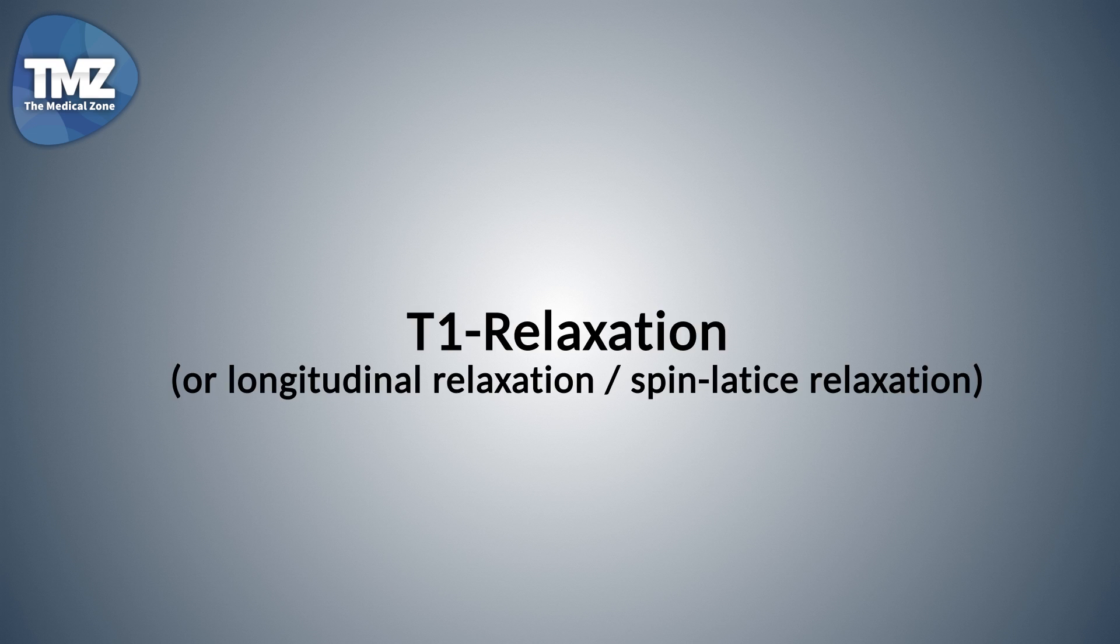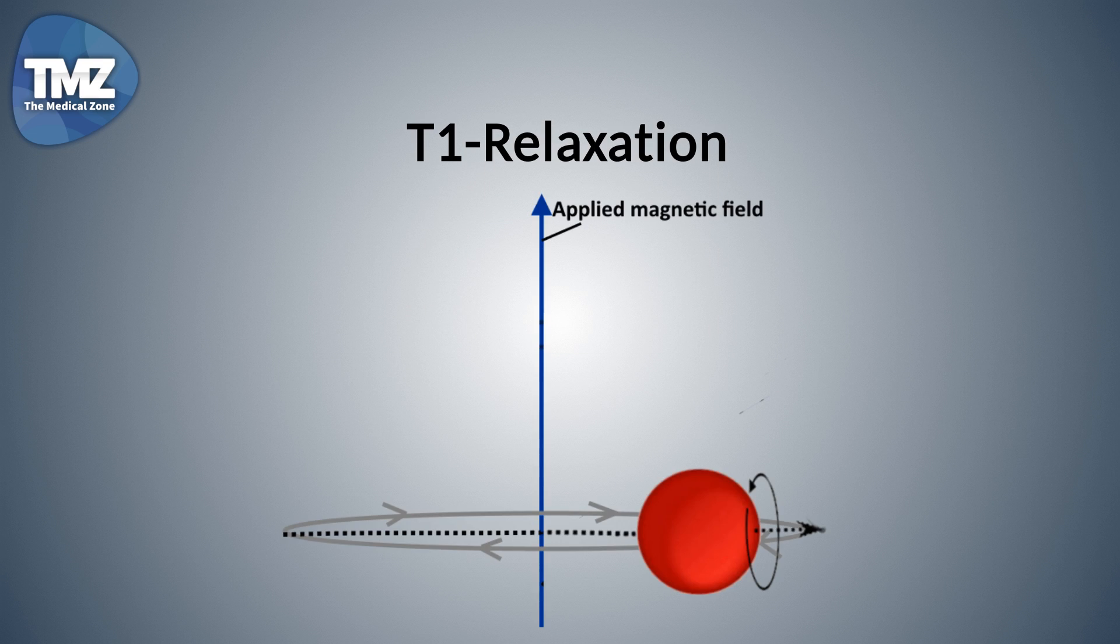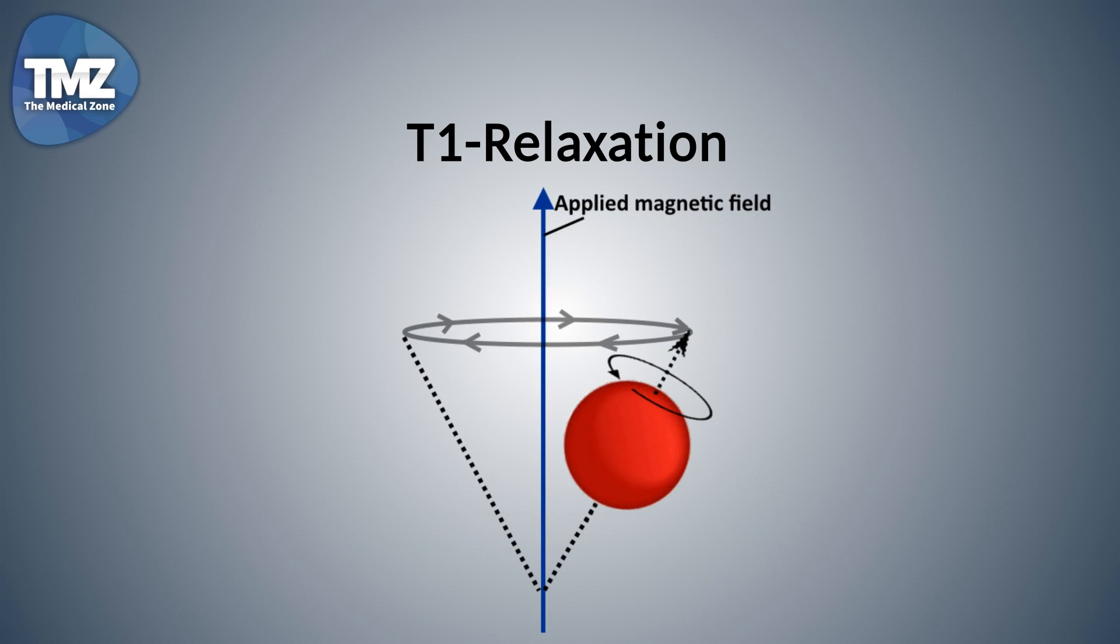Some more definitions that you may come across are the T1 relaxation. This is also called longitudinal relaxation and also spin lattice relaxation. This is the time to restore the axis from a perpendicular alignment to the magnetic field to a parallel alignment to the magnetic field.